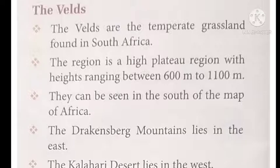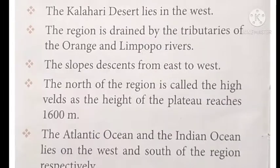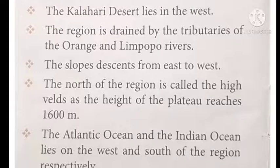Looking at the south of the map of Africa, we have to study the Drakensberg Mountain. The Kalahari Desert lies in the west. The region is drained by the tributaries of the Orange and Limpopo rivers.